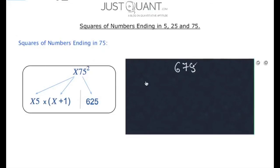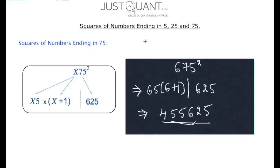Consider 675 square. The right part of the square is always 625. Now to calculate the left part, we know that the number preceding 75 in 675 is 6. Thus, x5 times x plus 1 is 65 times 6 plus 1, which is 65 times 7, or 455. Hence, by combining both the parts, the square of 675 is 4,55,625.